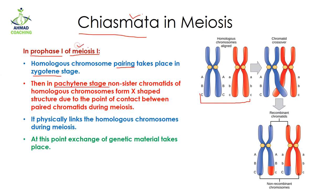In the next stage, which is the pachytene stage of prophase one of meiosis one, the non-sister chromatids of homologous chromosomes come together. This is one chromosome and this is another chromosome, and these are the chromatids — non-sister chromatids. They are going to make an X-shape structure like this, due to the point of contact between the paired homologous chromosomes. This X-shape structure is known as chiasmata.